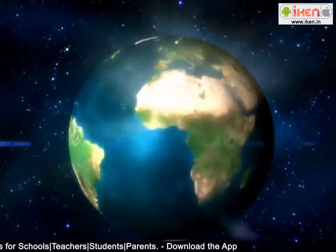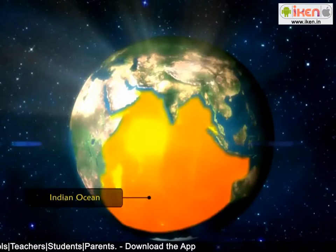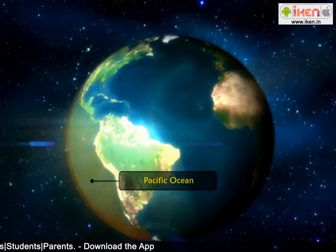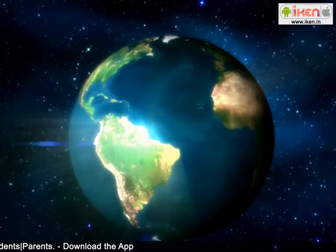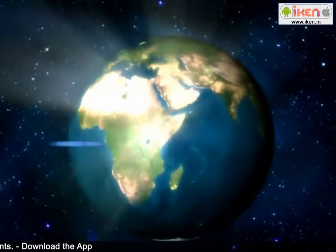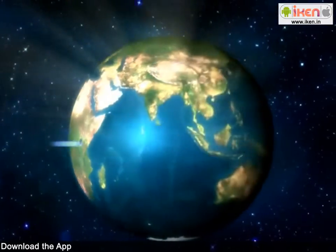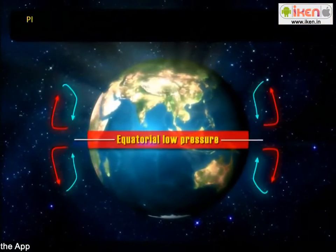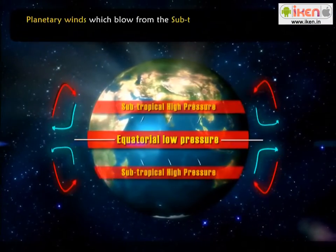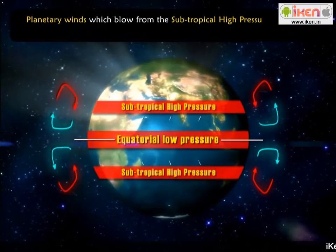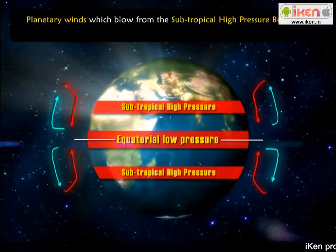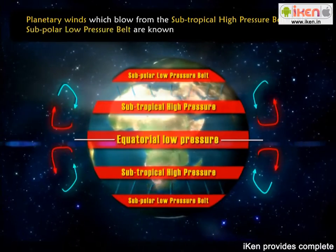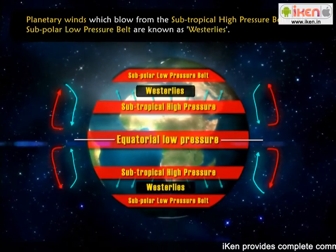But in the Indian Ocean and some parts of the south-west Pacific Ocean, trade winds are reversed in summer by the monsoons. Planetary winds which blow from the subtropical high-pressure belt to the sub-polar low-pressure belt are known as westerlies.